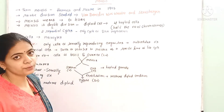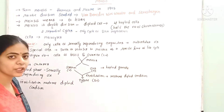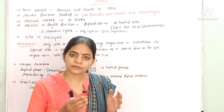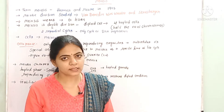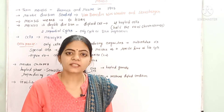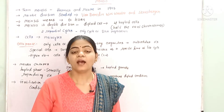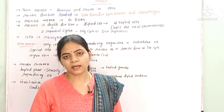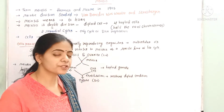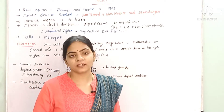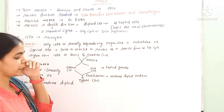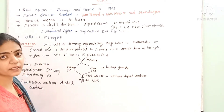If we see the introduction to meiosis: in mitosis, the parent cell forms two daughter cells, and those two daughter cells have the same number of chromosomes as the parent cell. Because the number of chromosomes remains the same, mitosis is called equational division. But meiosis has another name — reductional division.